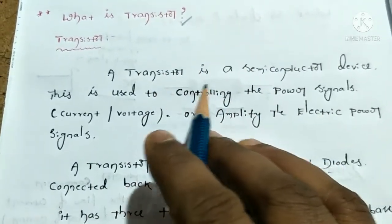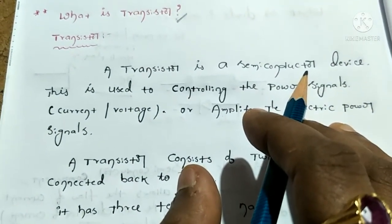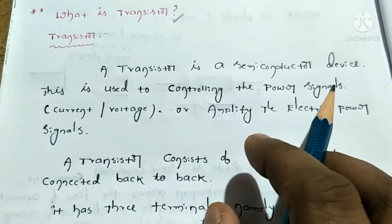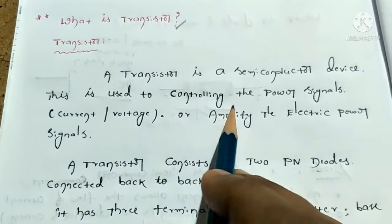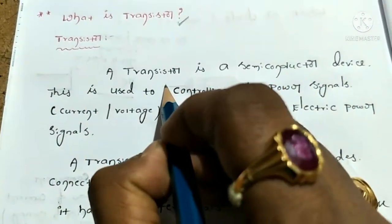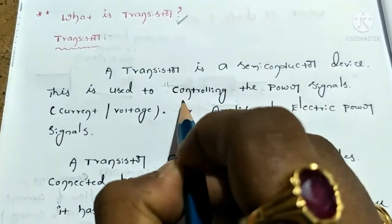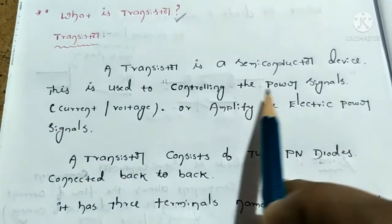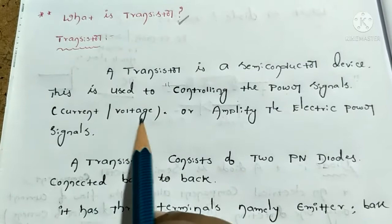A transistor is a semiconductor device. Transistors and diodes are also semiconductor devices. A transistor is used to control power signals. Why we use a transistor: it is for controlling power signals — power signals means current or voltage.